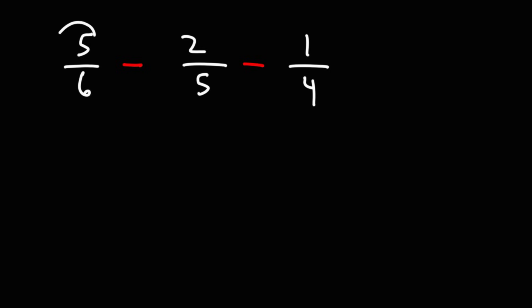So here's how we can do that. The first fraction, I'm going to use the other two denominators to get the common denominator. So I'm going to multiply the first fraction by 5 times 4, which is 20. So I'm going to multiply it by 20 over 20.